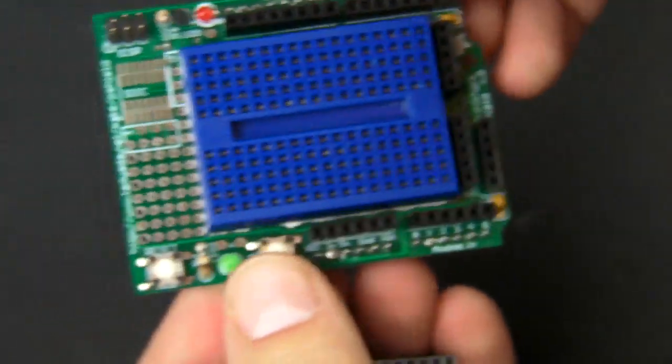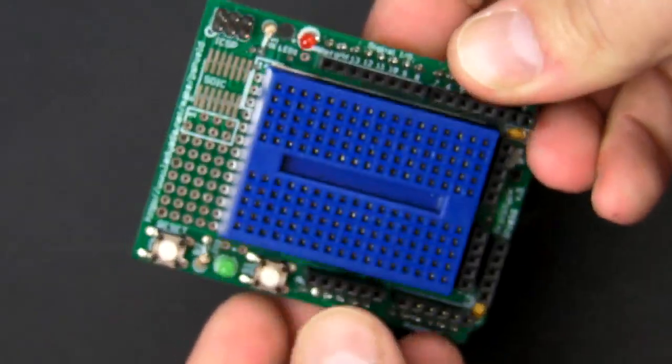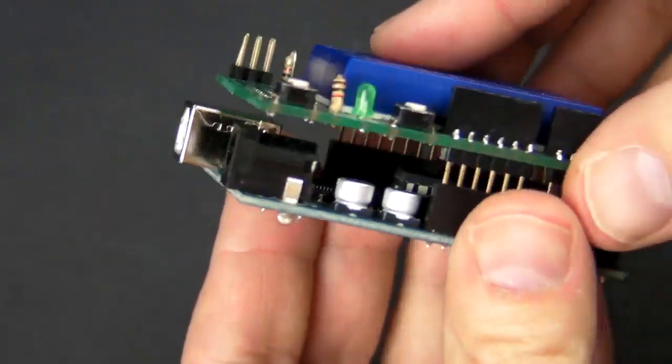And a Proto Shield. Both of these are available in the Maker Shed, so let's go ahead and get started with the build.